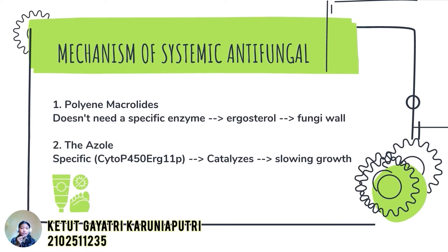My name is Gayatri with last digits NIM 235. Now we will discuss the mechanism of systemic antifungal. Since there are four classification groups, there are four mechanisms of action. First, polyene macrolides — an uncommon mechanism because this class does not need a specific enzyme. Instead, it interacts with a molecule called ergosterol, changing the formation of ionic pores and altering the permeability of the fungal cell wall. Second, azoles work specifically on CYP450 ERG11, catalyzing oxidative reactions on the target fungus, but this type only slows fungal growth rather than killing the fungi.